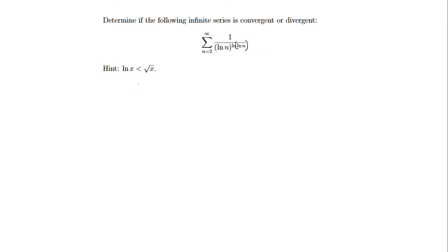The hint given is that the natural log of x is less than the square root of x. This is going to be slightly uncomfortable because we have to use the idea that e to the ln of x is equal to x.